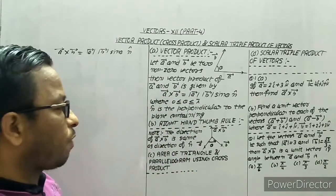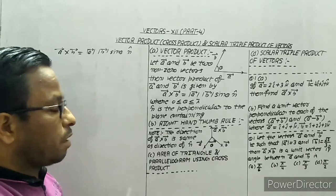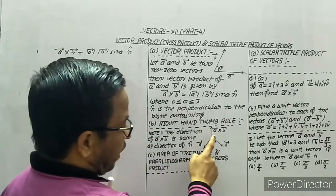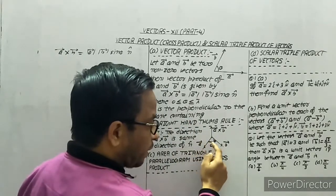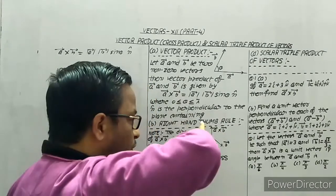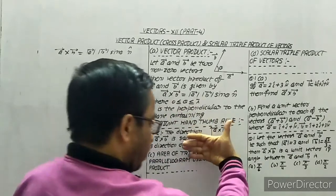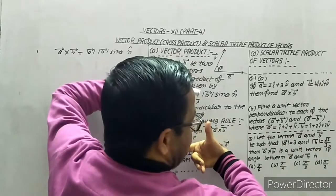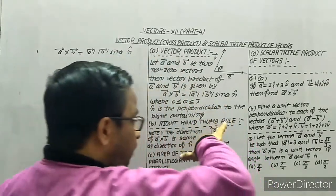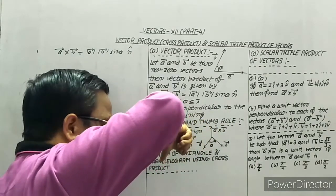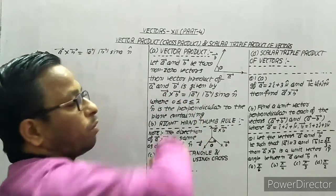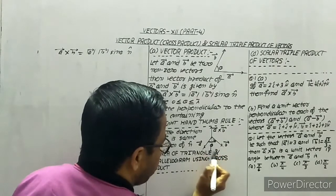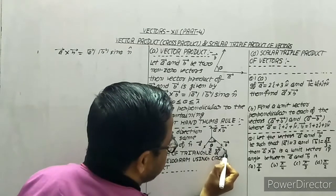To find the direction of a cross b, or n-cap, we use the right-hand thumb rule. If we have vector a and vector b with θ rotating from a to b and we fold our fingers from a to b in the direction of θ, then the thumb shows the direction of n-cap or a cross b — which is upward. If we take the angle from b to a, the direction comes downward.